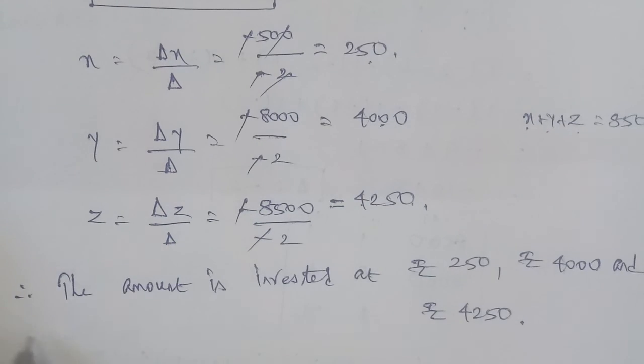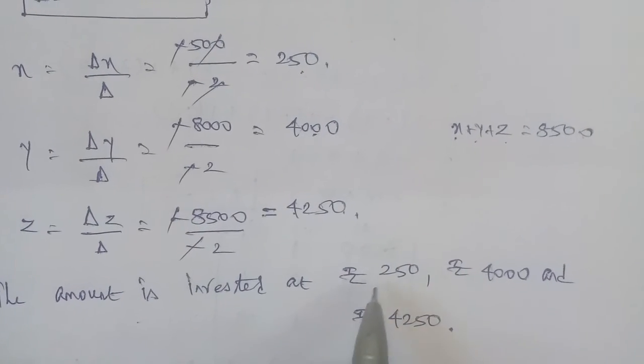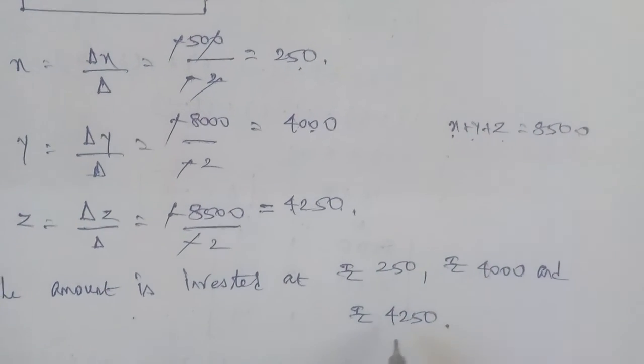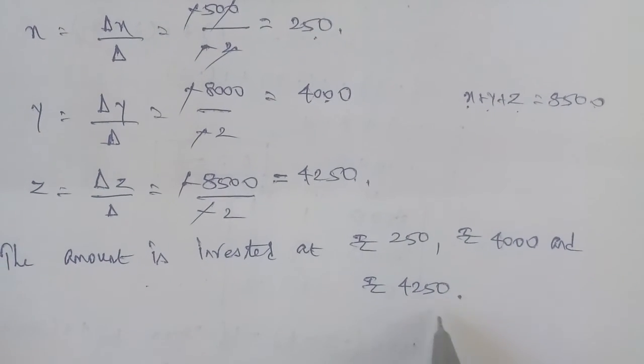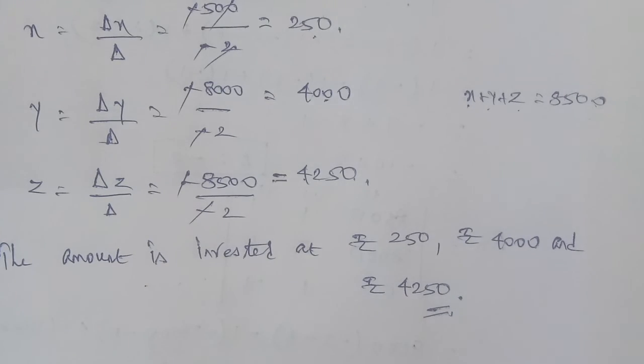Therefore, the amount invested in the first account is rupees 250, in the second account is rupees 4000, and in the third account is rupees 4250. This is the complete answer.